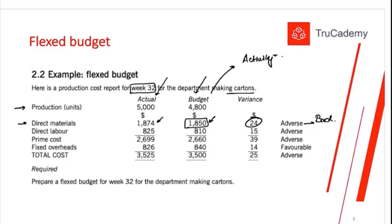But is this comparison valid? No — because the direct material budget of $1,850 was set based on 4,800 units, but actual production was 5,000 units. We cannot compare these figures directly. One rule for comparison is that you should compare like with like — you cannot compare apples with oranges. You need to compare apples with apples.